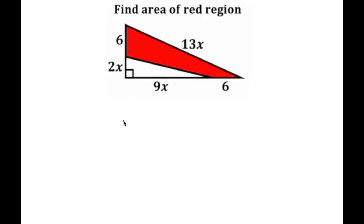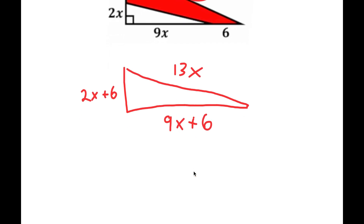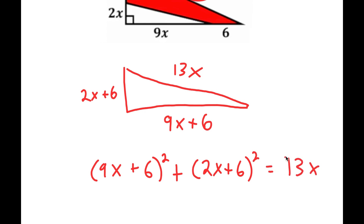Let me just draw another triangle over here. This whole side length is 13x, as given. This whole side length is going to be 2x plus 6. And this side length over here is going to be 9x plus 6. So we can say that (9x+6)² plus (2x+6)² is equal to (13x)², using the Pythagorean theorem, which is a² plus b² equals c².